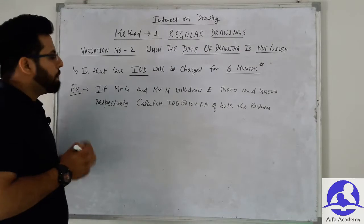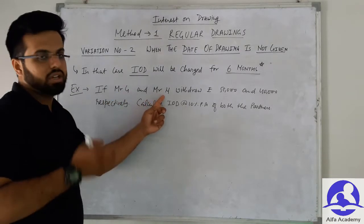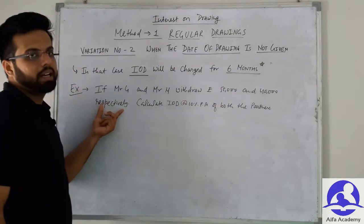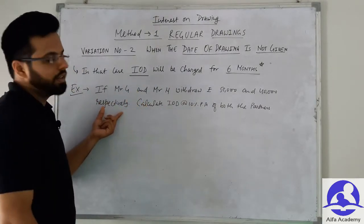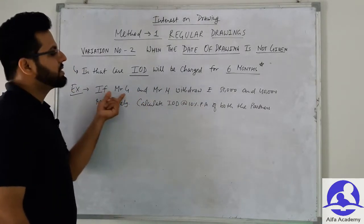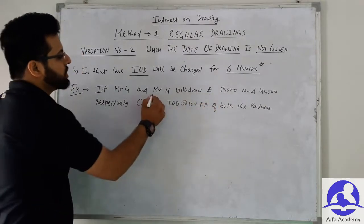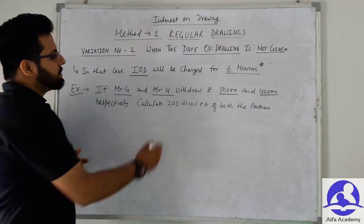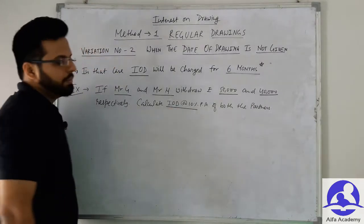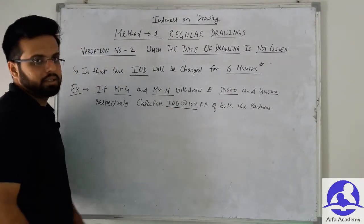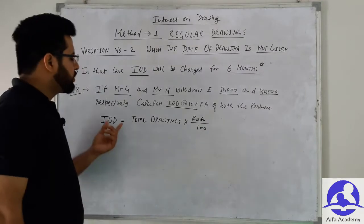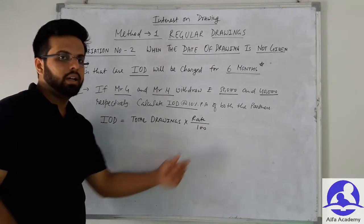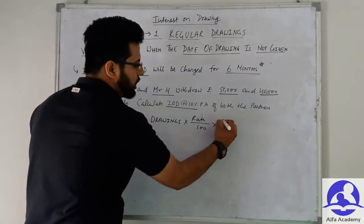Let's take an example. Suppose Mr. G and Mr. H are two partners and both withdrew 50,000 and 40,000 respectively. No other date is given in the question — only that Mr. G withdrew 50,000 and Mr. H withdrew 40,000. You need to calculate interest on drawing at 10% per annum. The formula for interest on drawing is: Total Drawings × Rate/100 × Average Months/12.